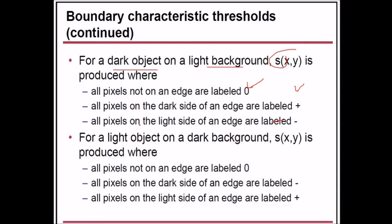For a light object on a dark background, this is taken otherwise: all pixels not on an edge are labeled 0, all pixels on the dark side of an edge are labeled minus, and all pixels on the light side of an edge are labeled plus.